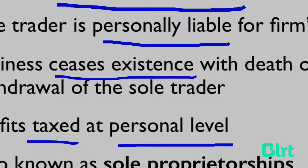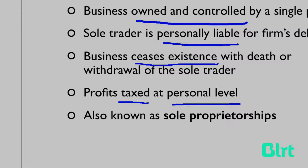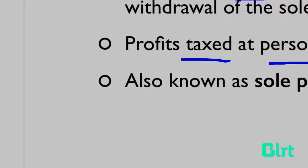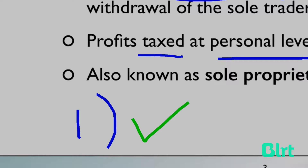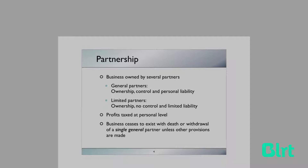Lastly, Anna is taxed at a personal tax level. You can be taxed at either a personal tax level or a company tax level; however, sole traders are always taxed at a personal tax level. One of the tasks I'd like you to do and come prepared to discuss is whether being charged personal tax is an advantage or a disadvantage for Anna in this scenario.